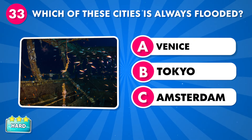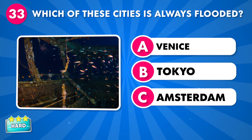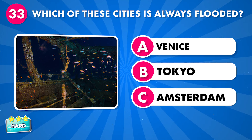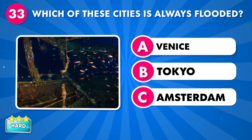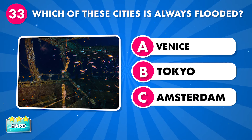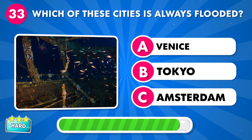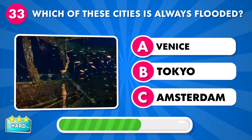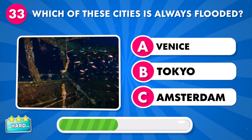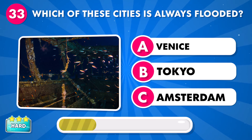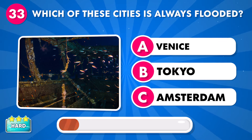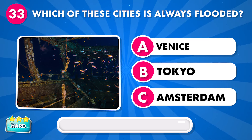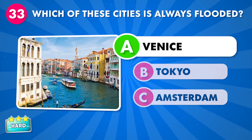Which of these cities is always flooded? A: Venice, B: Tokyo, C: Amsterdam. It's Venice.